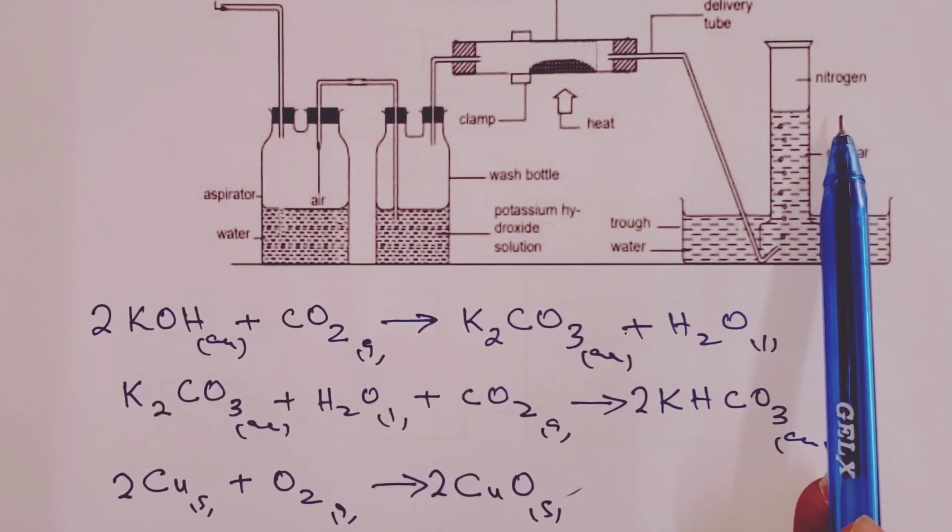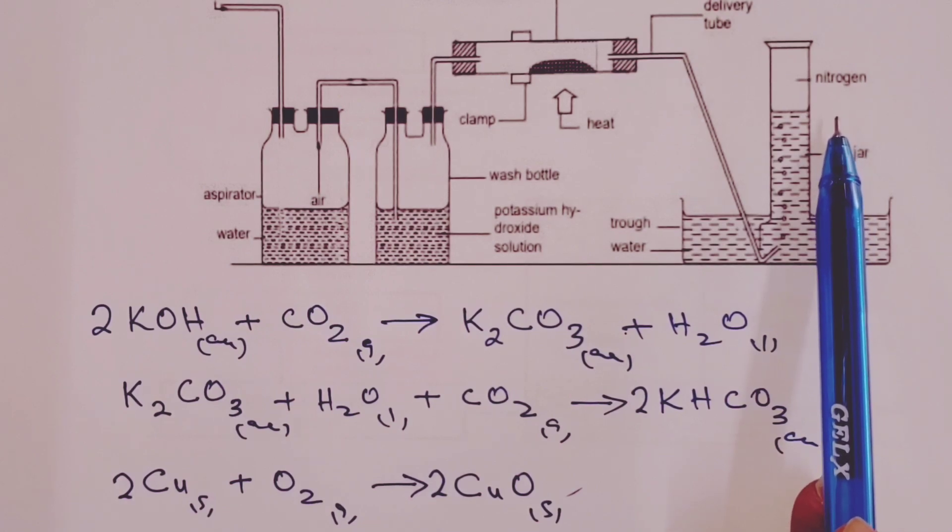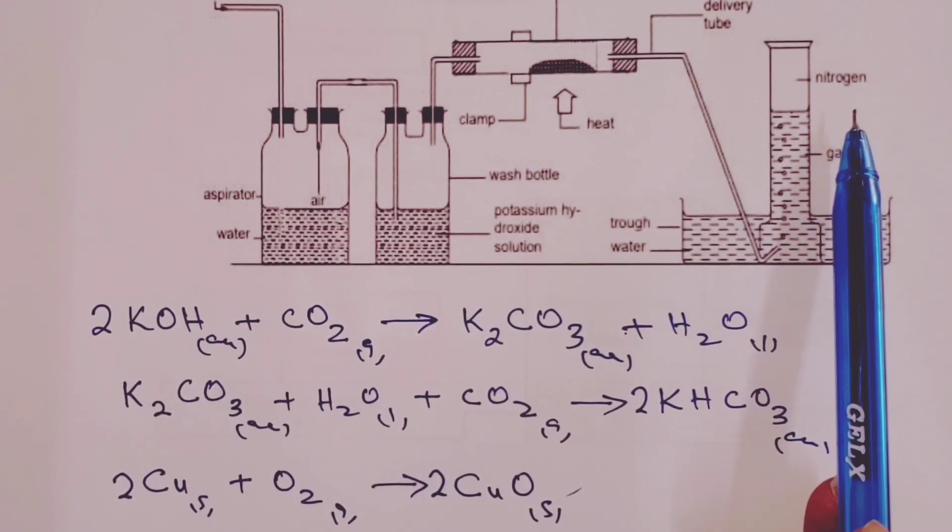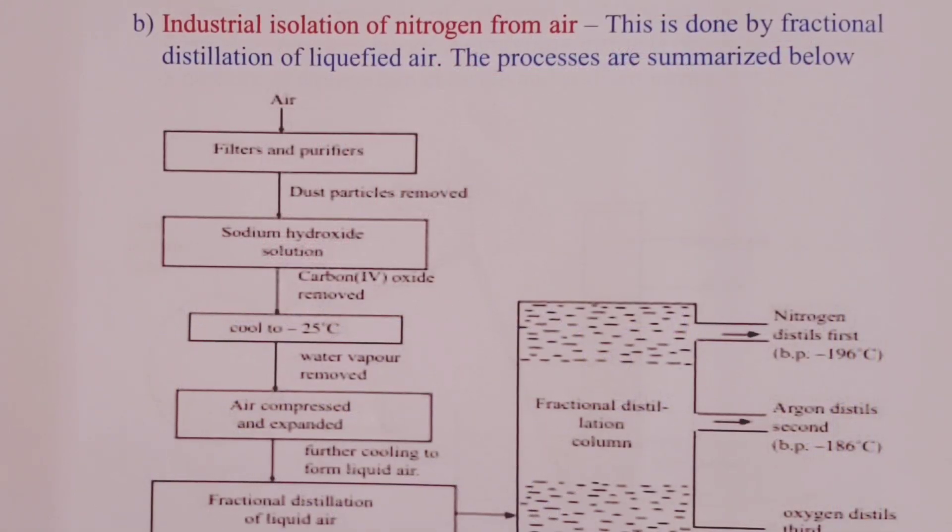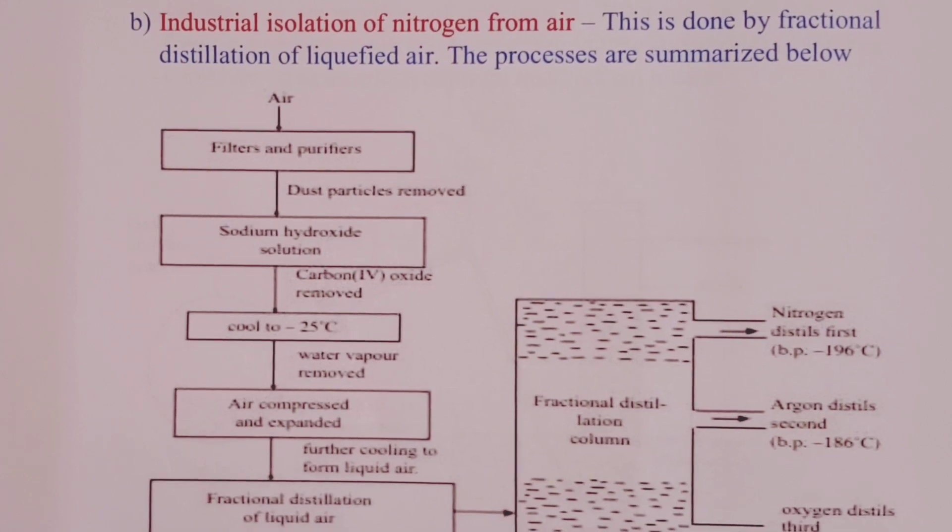Let us now have a look at how to isolate nitrogen from air on industrial scale. Industrially, nitrogen is isolated from air by fractional distillation of liquefied air. So, the processes that are done are summarized in the flowchart below.